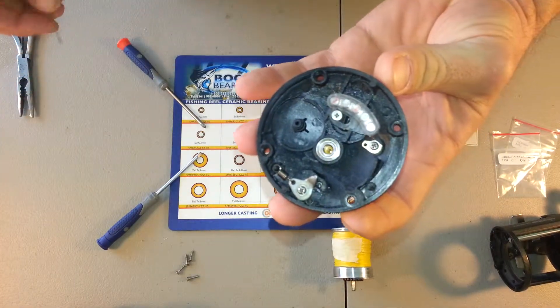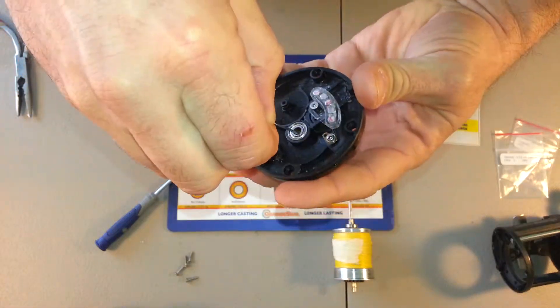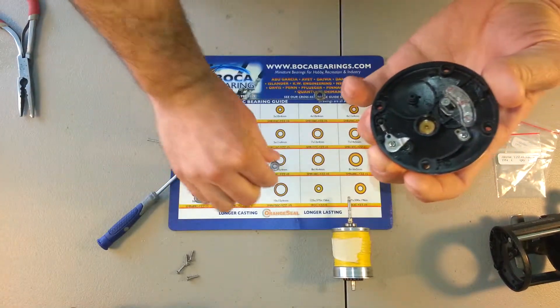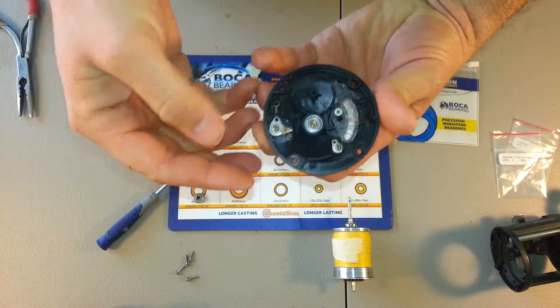Next up, I have the side plate. I'll get my bearing puller, slip it under the bearing, pop it out, get my replacement bearing, and pop it right in.